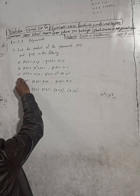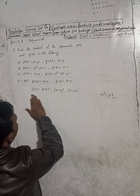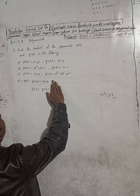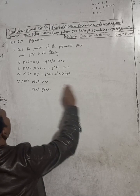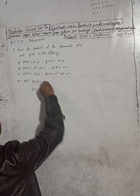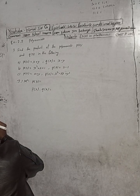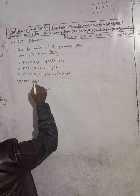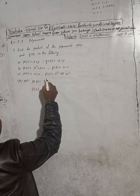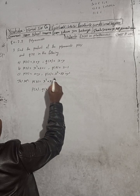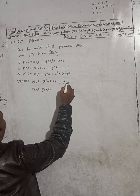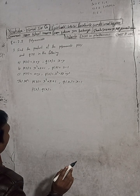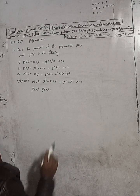3B: P(x) is equal to x squared plus x plus 1, and Q(x) is equal to x minus 1. Now we have to find the product of P(x) and Q(x).